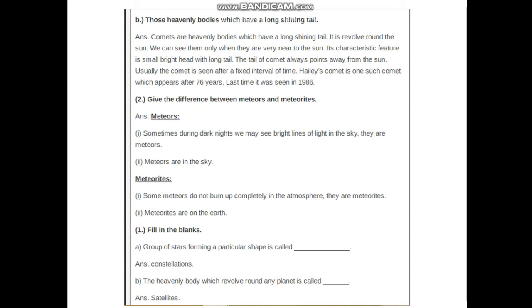Those heavenly bodies which have a long shining tail: Comets are heavenly bodies which have a long shining tail. They revolve around the sun. We can see them only when they are very near to the sun. Its characteristic features are small, bright head with long tail. The tail of the comet also points away from the sun. Usually the comet is seen after a fixed interval of time. Halley's comet is one such comet which appears after 76 years. Last time it was seen in 1986.